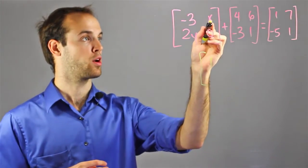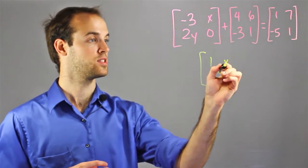Then, in the top right corner I have x and 6, so x plus 6.